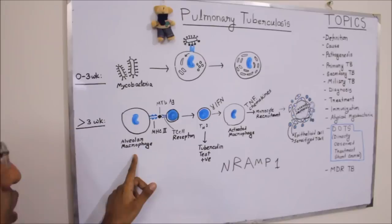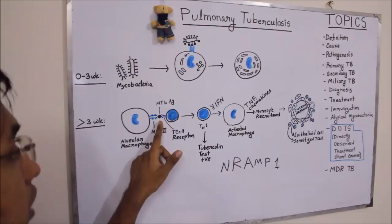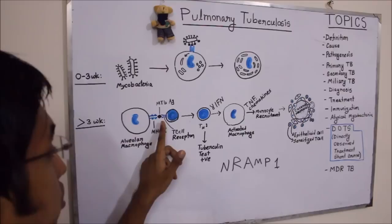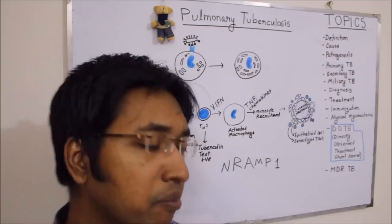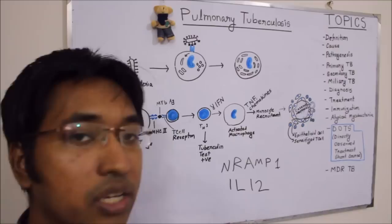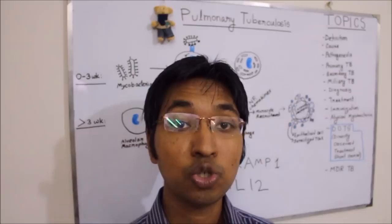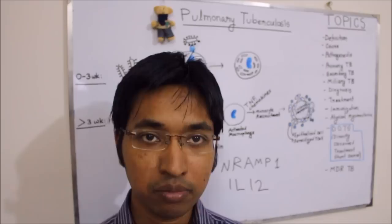This is the alveolar macrophage, this is the MHC class 2 molecule, this is the mycobacterium tuberculosis antigen, this is the T cell receptor, and this is the T cell. The T cell will then differentiate into a T helper 1 cell. Interleukin-12 is needed for T helper 1 cell differentiation, and interleukin-12 is produced by cells that encounter mycobacterium tuberculosis.